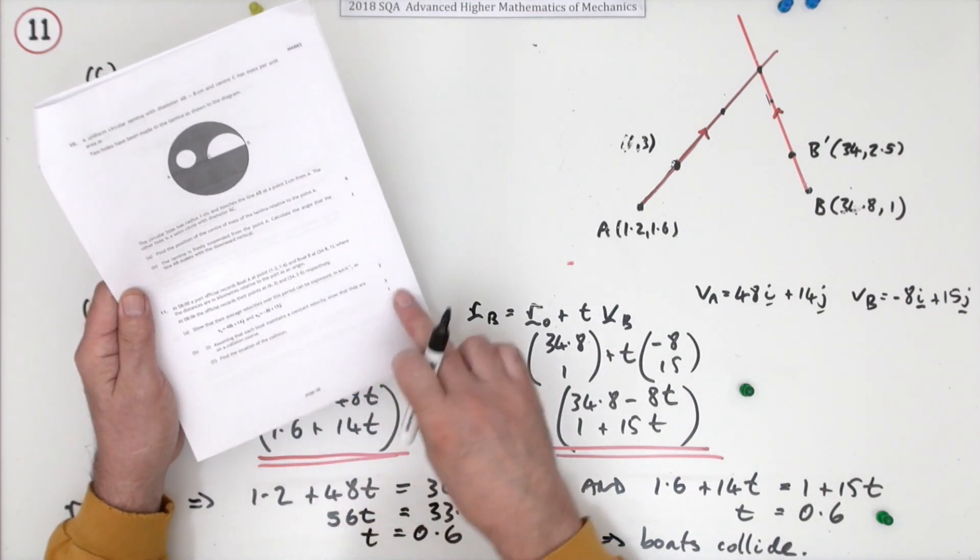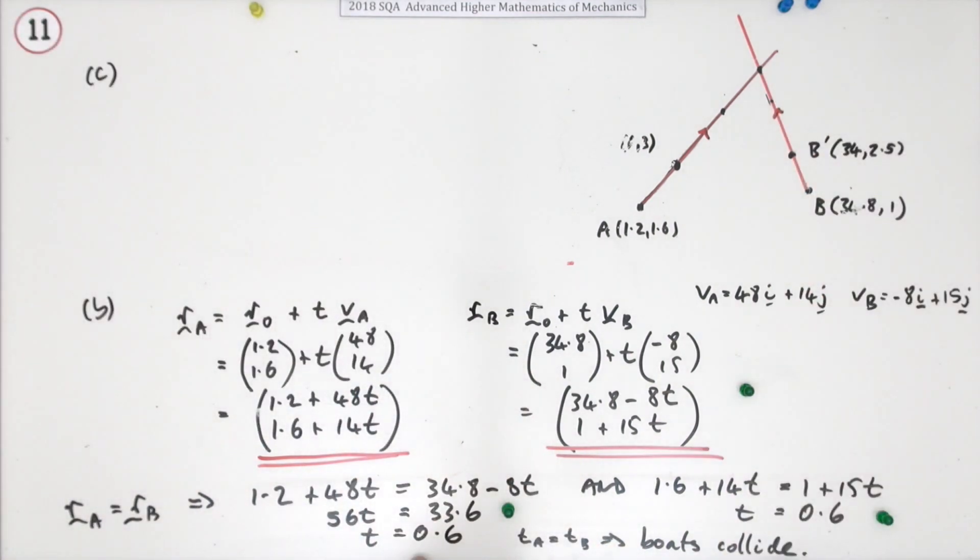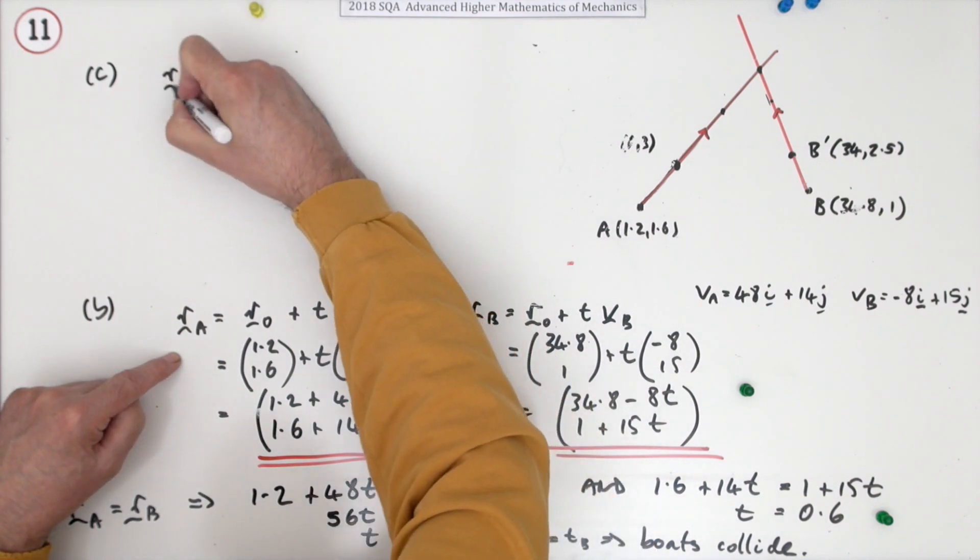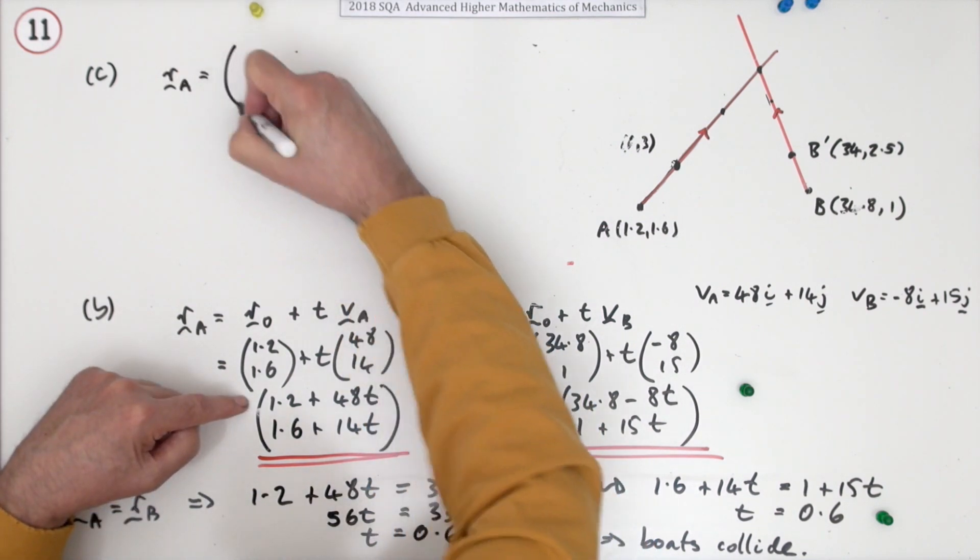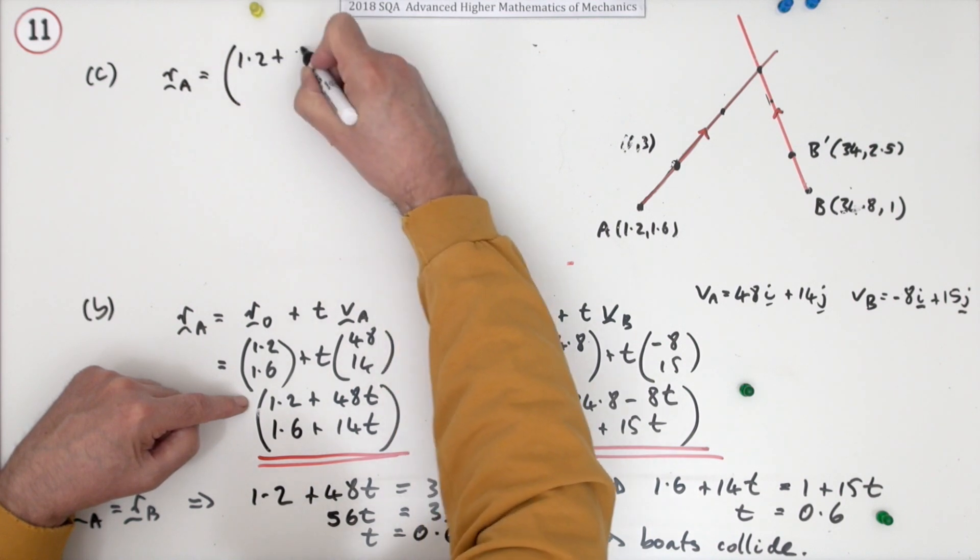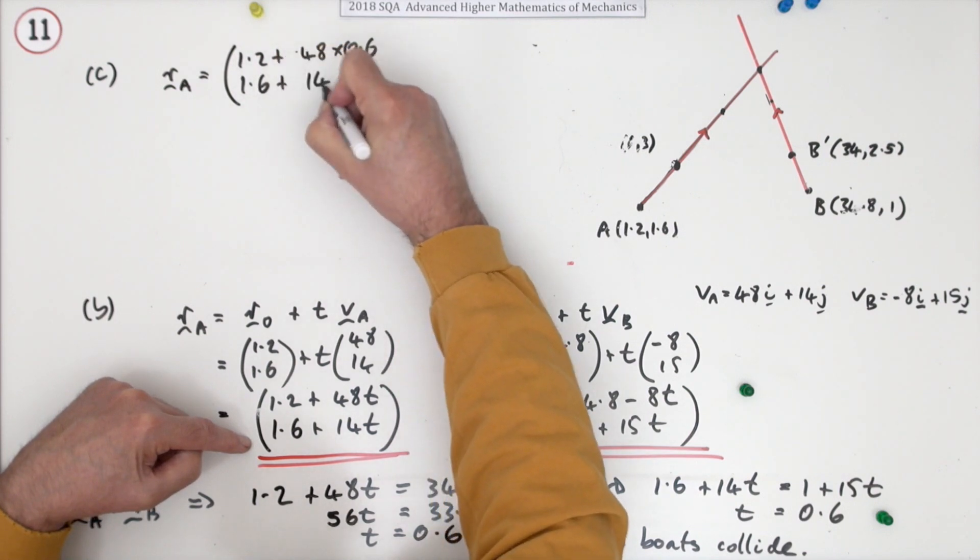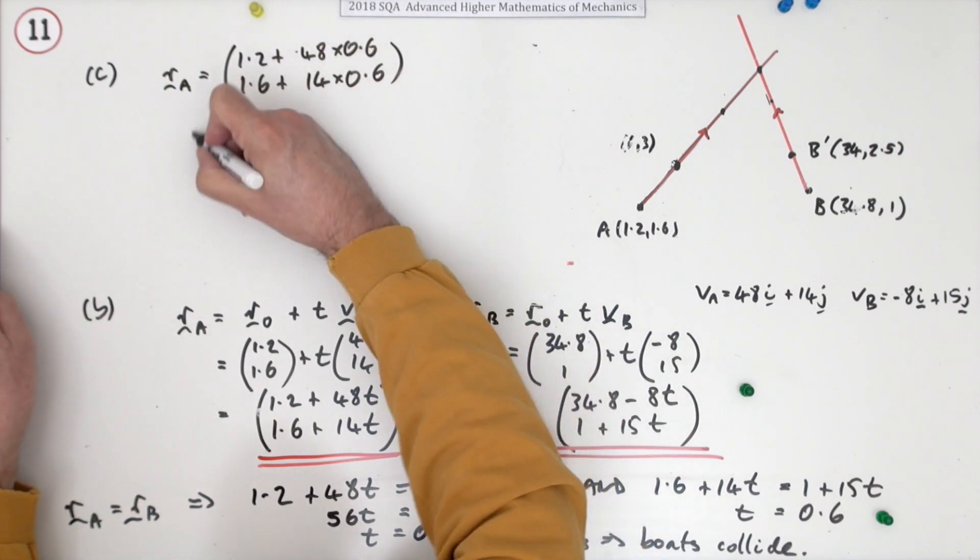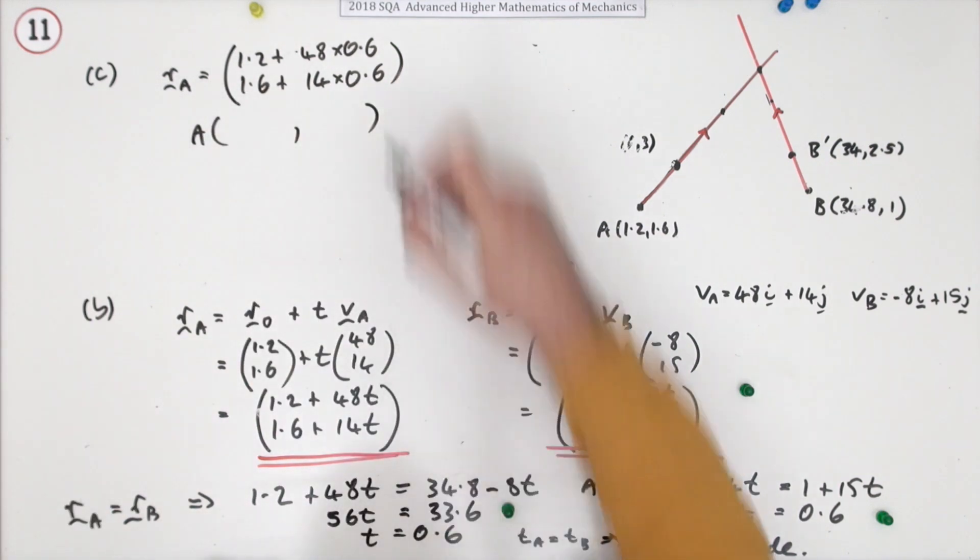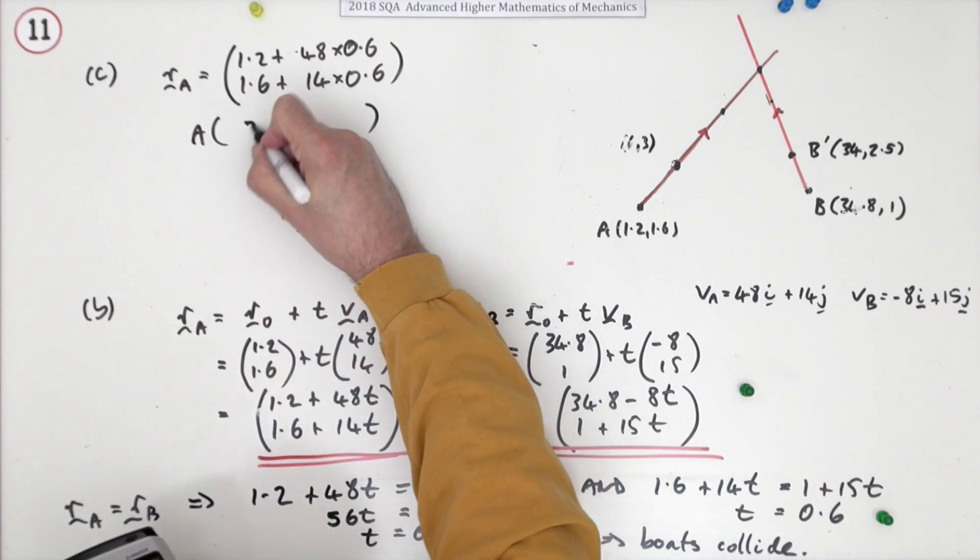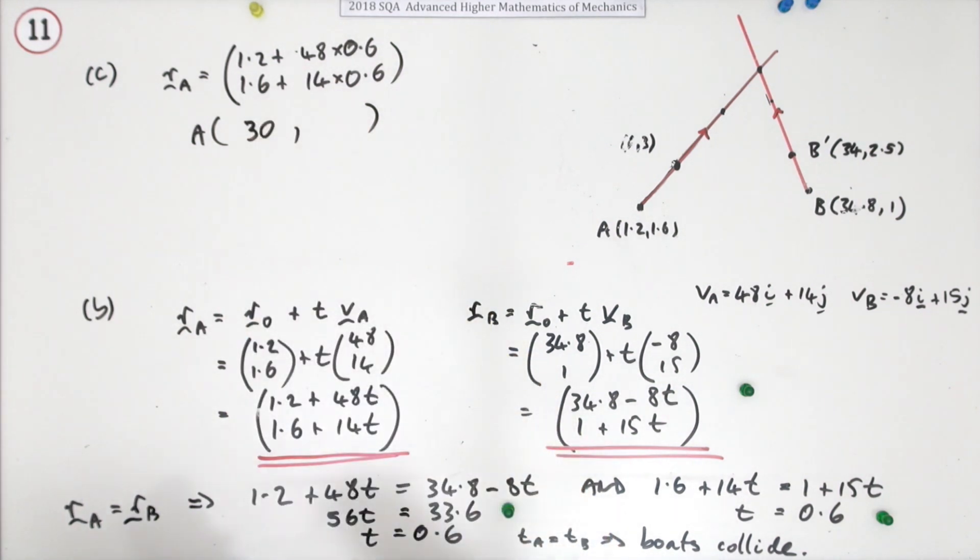Now for the last mark, what's the location of this collision? Well you can just put that time of 0.6 into either of these position vectors. So if I use this one here then I've got r_A is going to be (1.2 + 48 × 0.6, 1.6 + 14 × 0.6). Because there's only one mark, it's just a case of working that out and putting the answer down. So that one comes to 30 and that comes to 10, and that's the last mark.